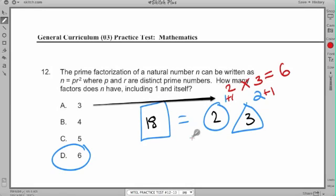So this natural number, if it's something to the first and something to the second, and I add 1 to each one of those exponents, then I multiply them, it gets me 6. So I know this natural number has 6 factors.